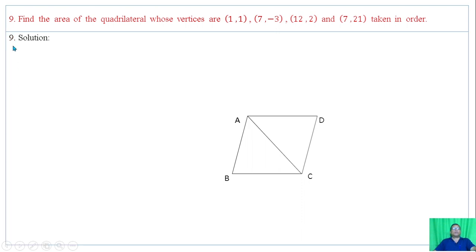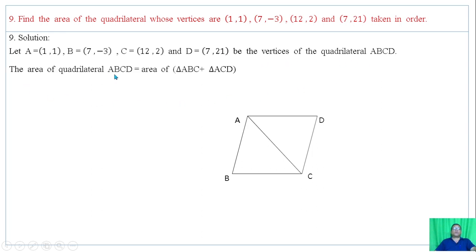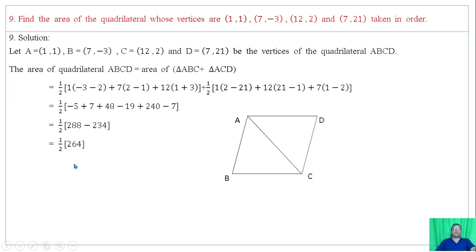Question 9: Find the area of the quadrilateral whose vertices are given in order. Let A, B, C, and D be the vertices of the quadrilateral ABCD. The area of quadrilateral ABCD is area of triangle ABC plus area of triangle ACD. Using the formula we have the calculations, and summing up we get 132 square units.